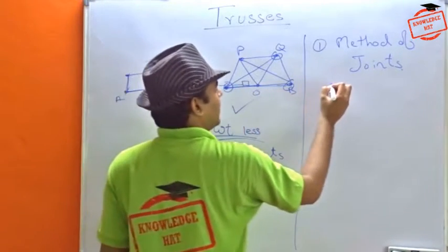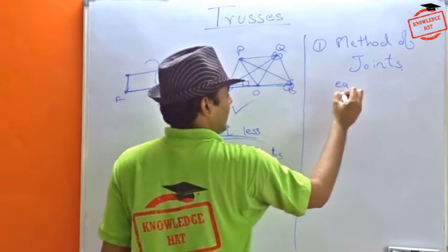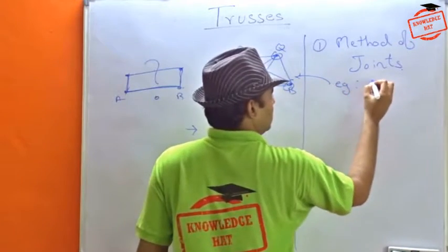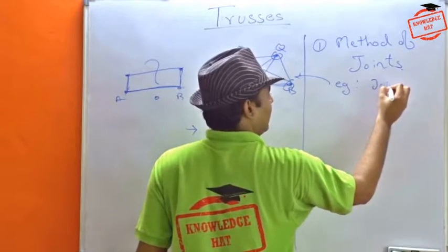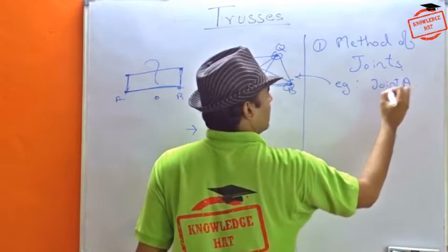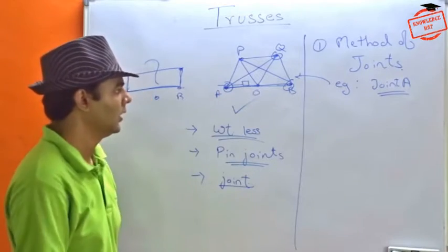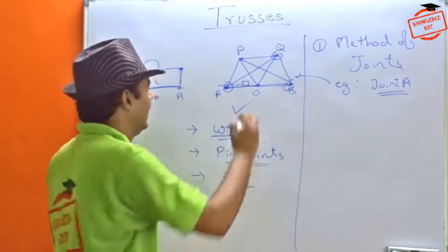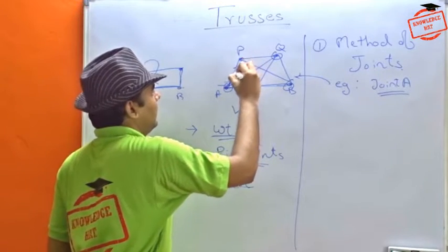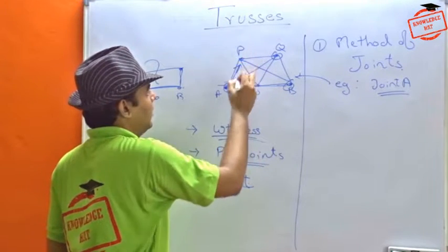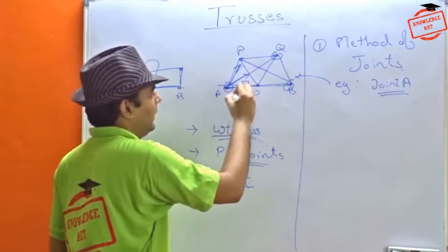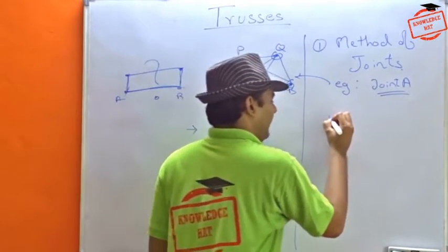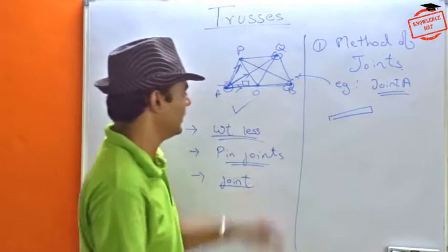We take one joint at a time. Suppose for example, we take this system, joint A. We begin with joint A. At joint A, we will see what are the forces acting at joint A. This is a member which will have some force. This will have some force. This will have some force. So each member, suppose this is a member in a truss, it can have only two kinds of forces.